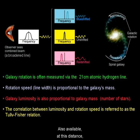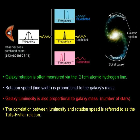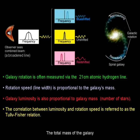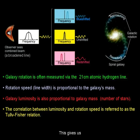Also available at this distance is the Tully-Fisher relation. This relies on the fact that more massive galaxies rotate faster, which can be measured via the Doppler method. The total mass of the galaxy is related to its total luminosity, giving us yet another standard candle.